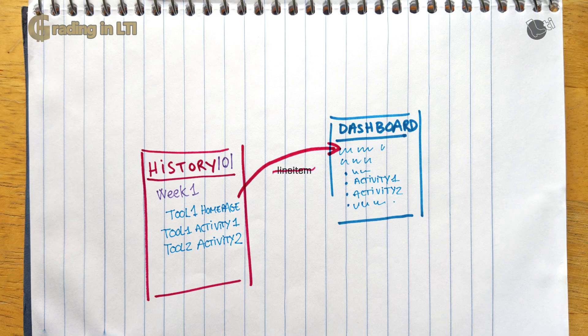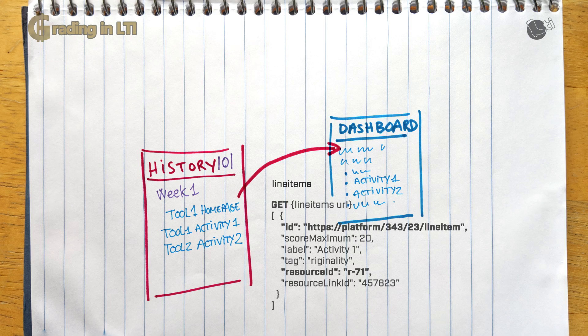This is where another very important capability of the assignment and grade service comes handy. It's the ability to query the platform for all your line items. So when the assignment and grade service is enabled for a tool, all LTI messages to the assignment and grade service claims will contain the line items URL, which allows you to get a list of all yours and only your line items that exists in the current course context in the current gradebook. So remember that resource ID we specified in the deep linking request? It will be included in that response. So in our example, executing a get on the line items URL will return the existing line items, and we will be able to use the resource ID to know which line item is the one for the activity and so be able to post grades.